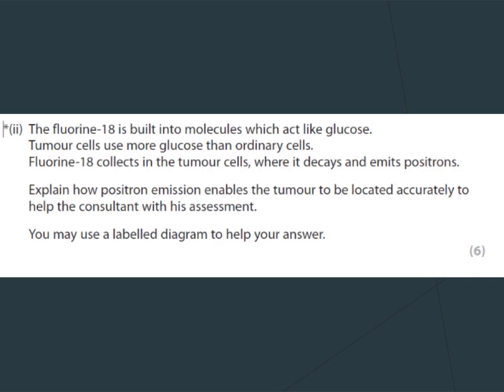This is a popular six-mark question from Edexcel on the use of positron emission tomography. Fluorine-18, our radioactive isotope, is built into molecules which act like glucose. Tumour cells use more glucose, therefore it will collect, decay, and emit positrons. The question asks: explain how positron emission enables the tumour to be located accurately to help the consultant with his assessment. You may use a labelled diagram. The important part is the idea of positron emission and the location of the tumour.